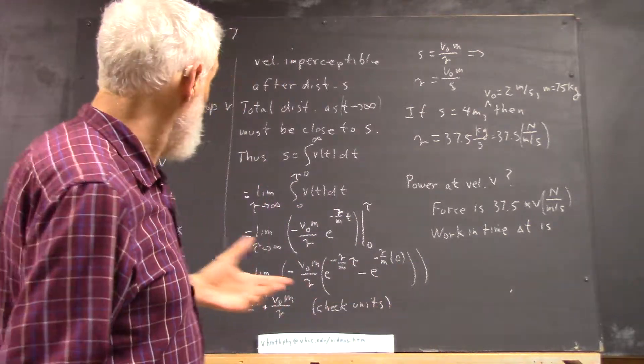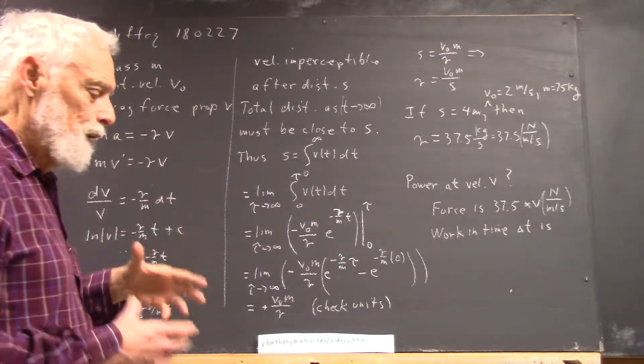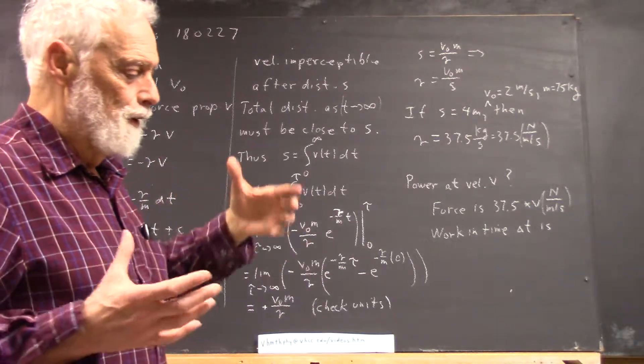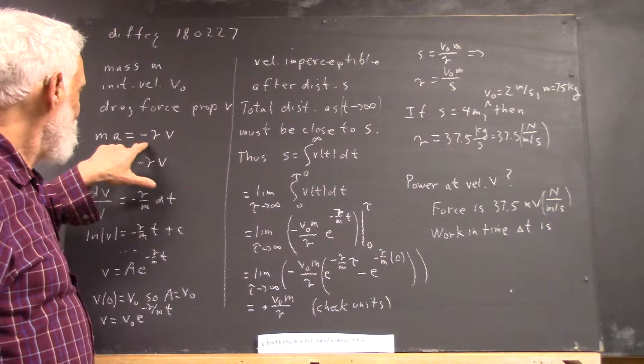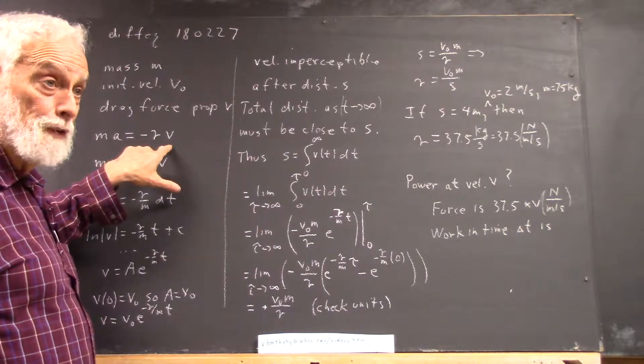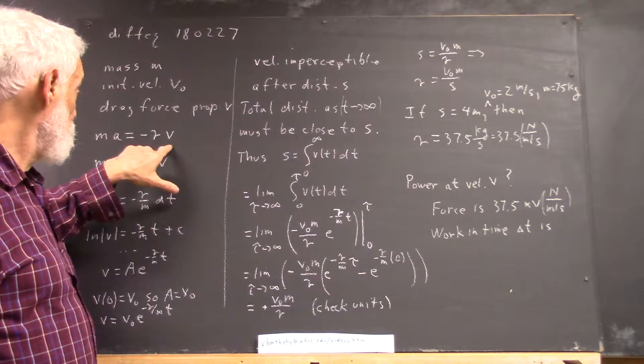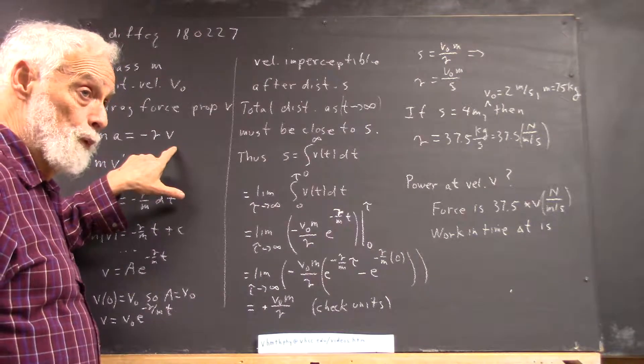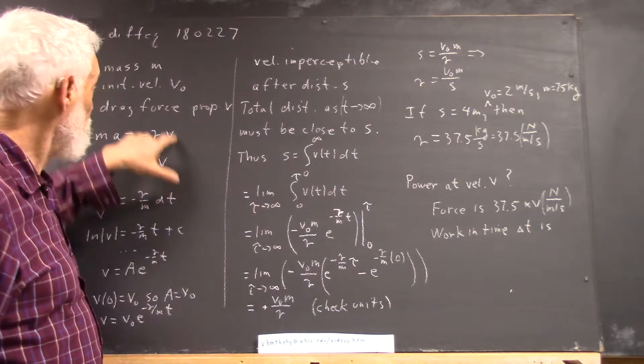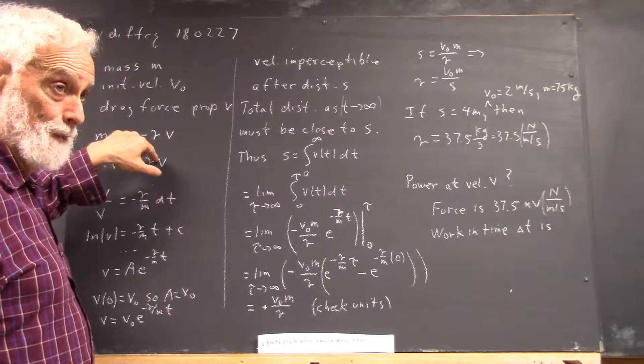But at some point, I'm creating enough vortices that that starts changing the assumption that drag is proportional to velocity. And I get into a situation where drag is proportional to the squared velocity, which is the other assumption we're going to use with this information.